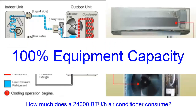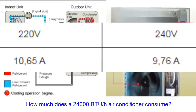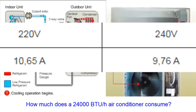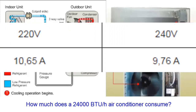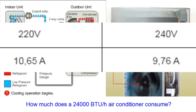For a single phase power supply voltage of 220 volts, the average current consumption of the equipment at 100% capacity is 10.65 amperes. For a single phase power supply voltage of 240 volts, the average current consumption at 100% capacity is 9.76 amperes.